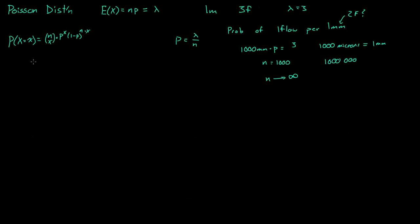So if we plug in p equals lambda over n and then take the limit as n approaches infinity, we will have a Poisson distribution. This is now equal to the limit as n goes to infinity of n choose x, times lambda over n to the power of x, times 1 minus lambda over n to the power of n minus x. Now we have to actually take the limit, and this is just going to be a pure exercise of limits. What we'll see is we actually get e to the negative of something, which is kind of impressive.